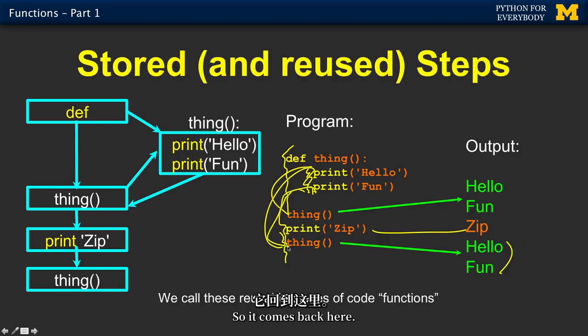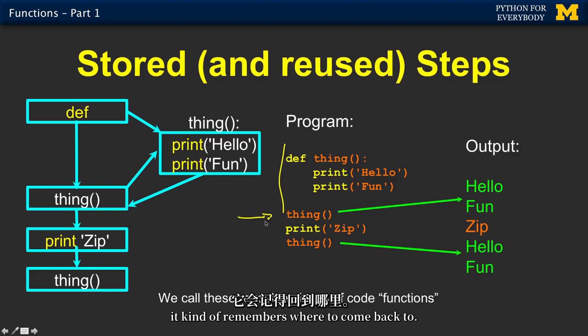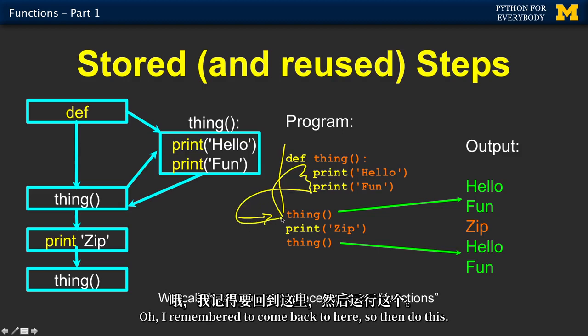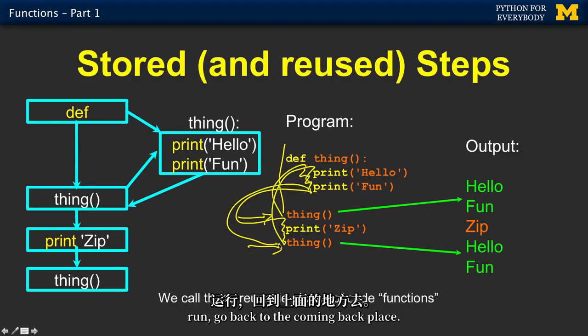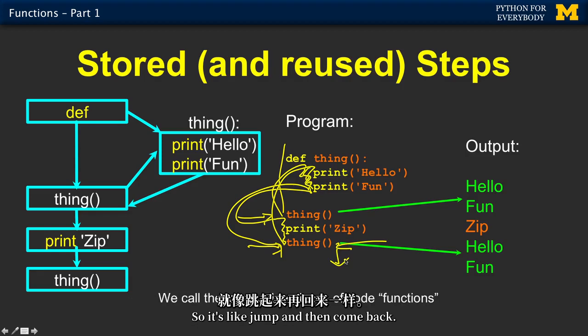So it comes back here. So one of the things about functions is that Python, when it calls a function, it kind of remembers where to come back to. It's like, OK, go up here. Now I'm done. Where do I go back to? Oh, I remembered to come back to here. So then do this. OK, here's my coming back place. Run up again, run, go back to the coming back place. So it sort of pauses this code. Pause here, run this, and then resume there. So it's like jump and then come back.